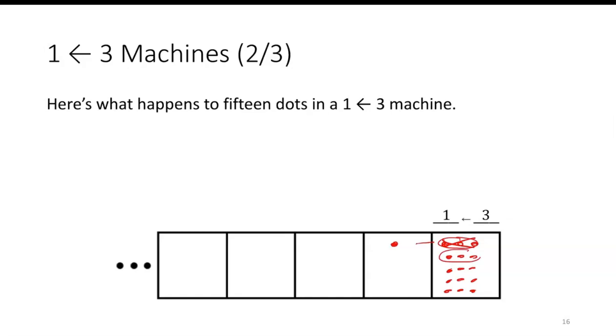These three dots become one, these three become one, these three become one, and these three become one. So 15 divided by 3 is 5. You might notice that we have five dots now to the left.